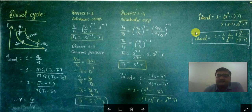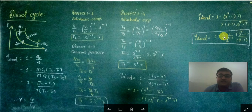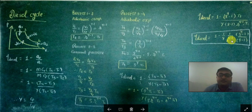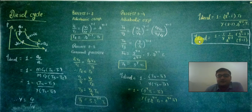From this expression, one can logically conclude: if the cutoff ratio is constant and the compression ratio increases, the cycle efficiency increases. Conversely, if the compression ratio is constant and the cutoff ratio increases, the cycle efficiency decreases. Therefore, the optimal condition is a minimum cutoff ratio combined with a maximum compression ratio to maximize efficiency.